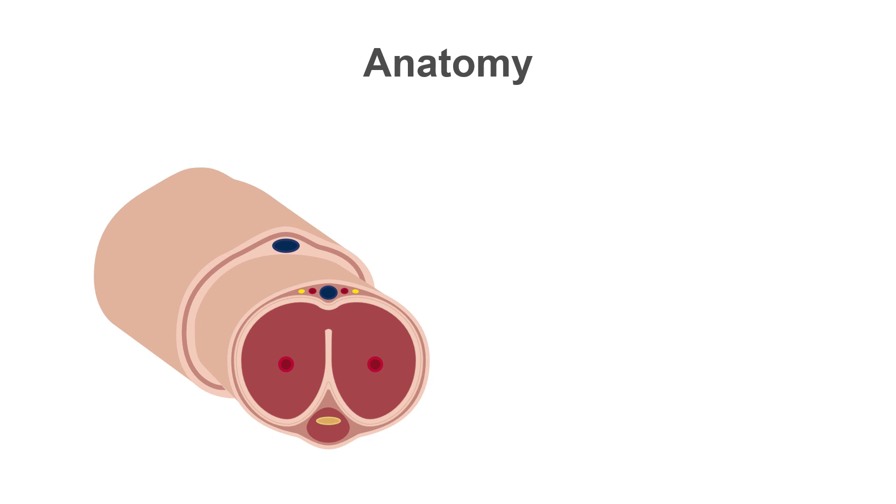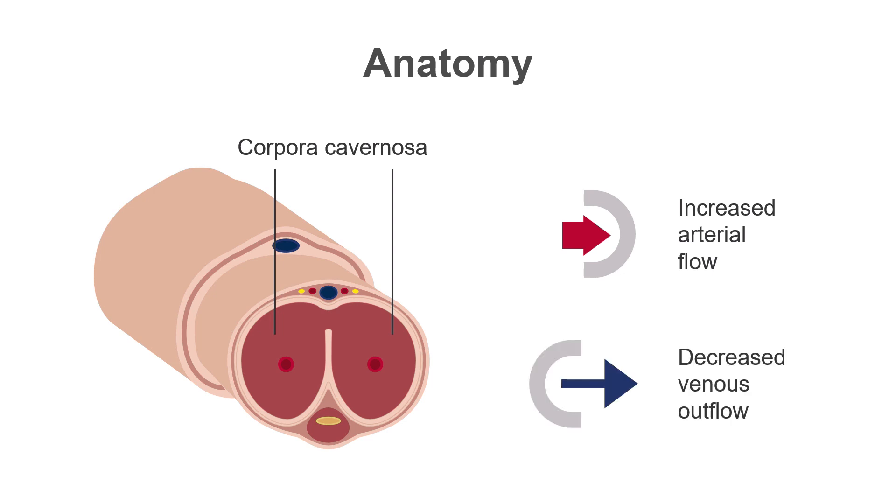Erection of the penis is achieved by engorgement of the corpora cavernosa, by increased arterial flow and decreased venous return. There are two of these in the penis, but it's important to note that they are connected to each other. So that's why you don't have to inject both sides of a penis when we discuss treatment in the next lesson.